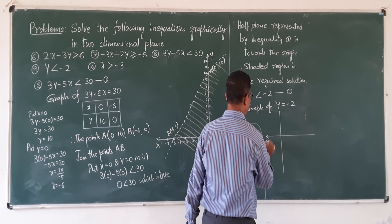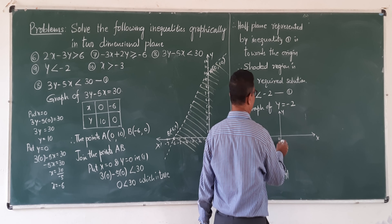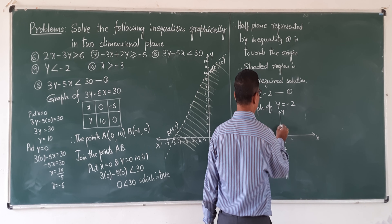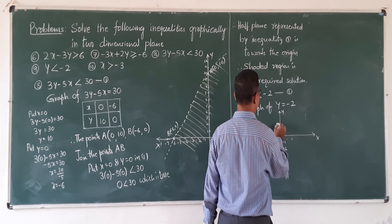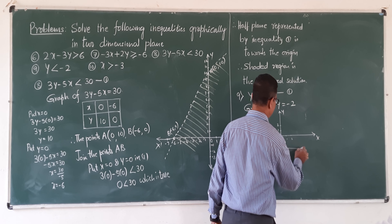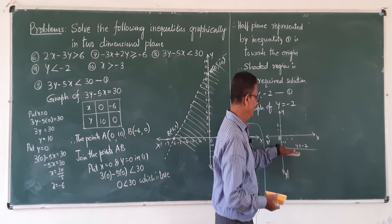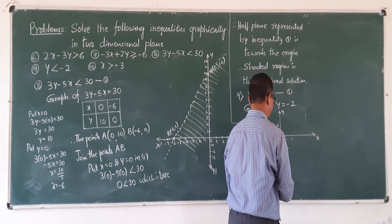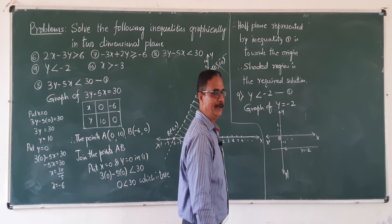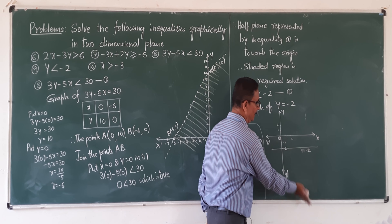This is the x-axis, y-axis, x-dash, y-dash, origin. Here positive values 1, 2, 3 and so on; negative values minus 1, minus 2. The line y equals minus 2 is parallel to the x-axis. We again get two parts — upper half plane and lower half plane.